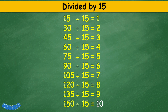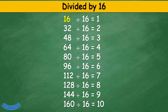Divided by 16: 16 divided by 16 equals 1, 32 divided by 16 equals 2, 48 divided by 16 equals 3, 64 divided by 16 equals 4, 80 divided by 16 equals 5, 96 divided by 16 equals 6, 112 divided by 16 equals 7, 128 divided by 16 equals 8, 144 divided by 16 equals 9, 160 divided by 16 equals 10.